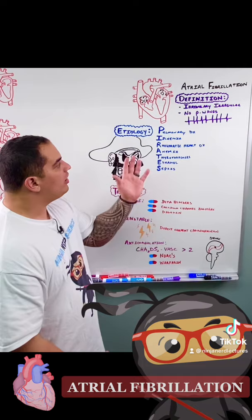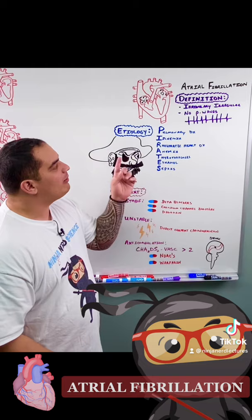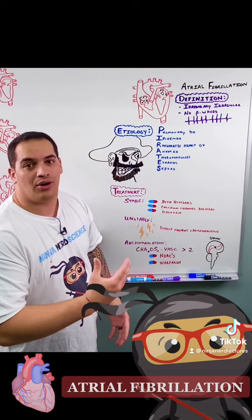What are the potential causes of atrial fibrillation? You can remember the mnemonic pirates. Arrrr matey! Right? So you can remember that it stands for pulmonary disease, ischemia, rheumatic heart disease, anemia, thyrotoxicosis, ethanol, and sepsis.